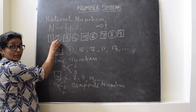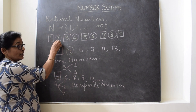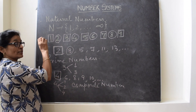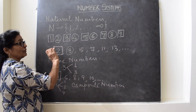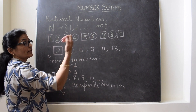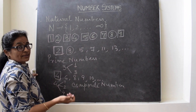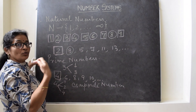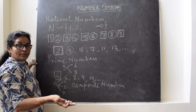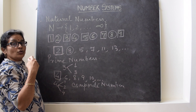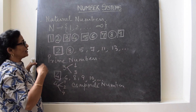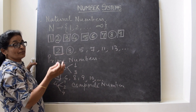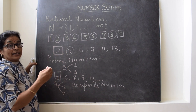The smallest even number is 2 and the smallest odd number is 1. But if you ask about the greatest numbers, there is no greatest natural number, there is no greatest whole number, there is no greatest even number.